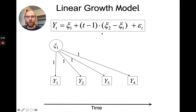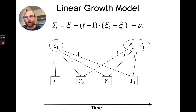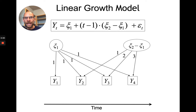The variables also load onto the slope factor, and those loadings are also fixed because they are a function of t minus 1. The first variable doesn't load onto the slope factor because 1 minus 1 equals zero — making this the starting point. The second variable has a loading fixed at 1, the third at 2, and the fourth at 3. This makes it a linear slope factor: the effect is 1 at the second occasion, double at the third, and triple at the fourth, implying that the latent trajectories change linearly across time.